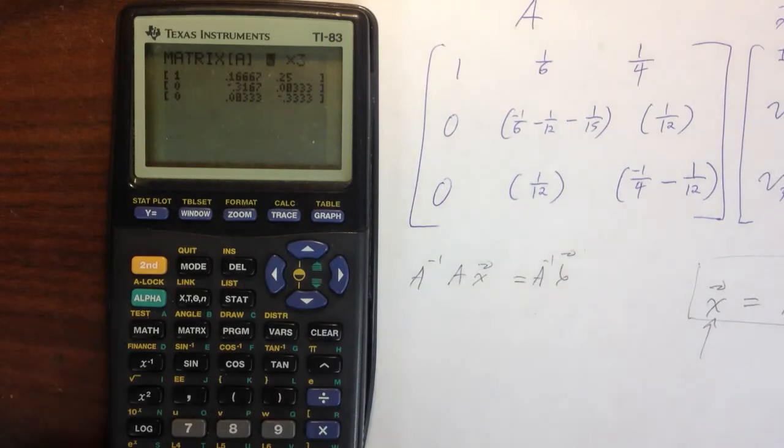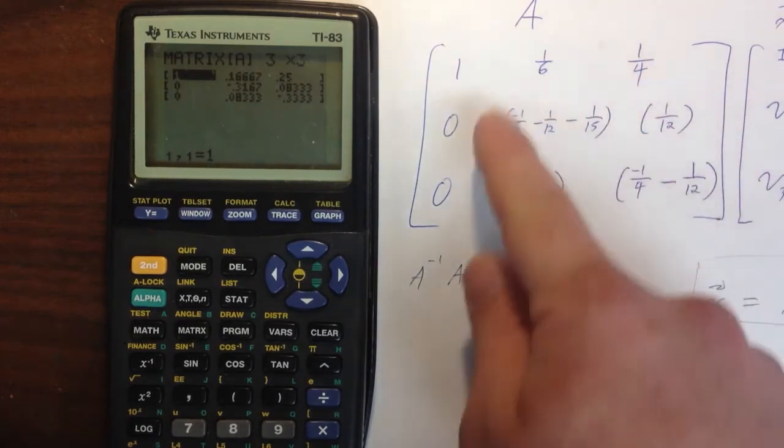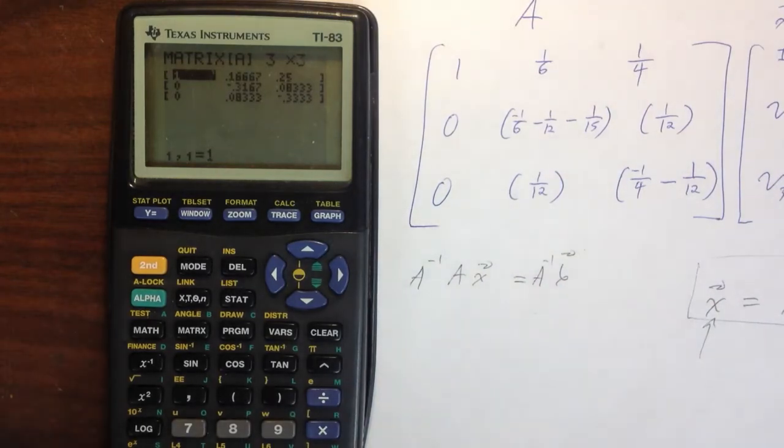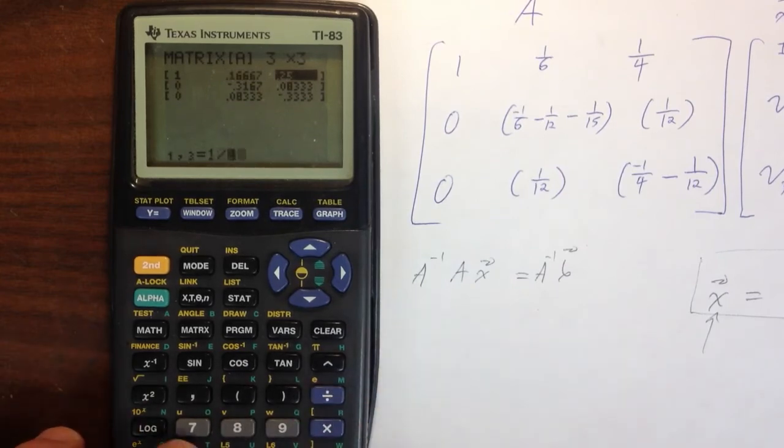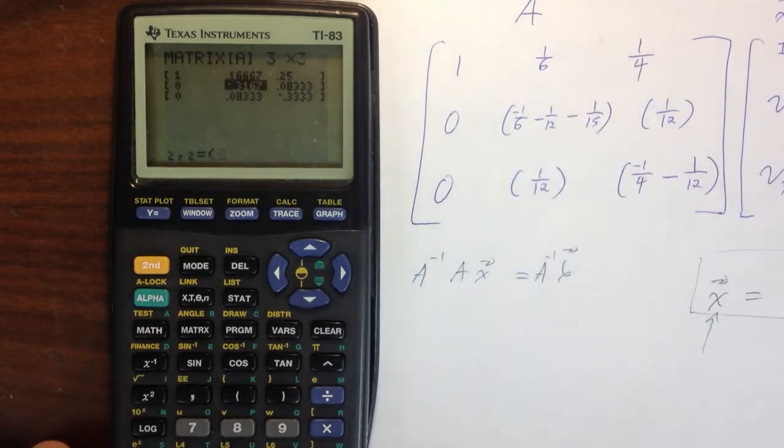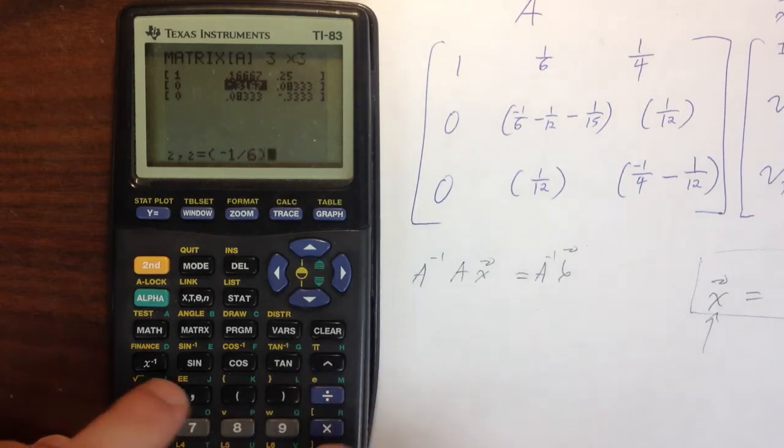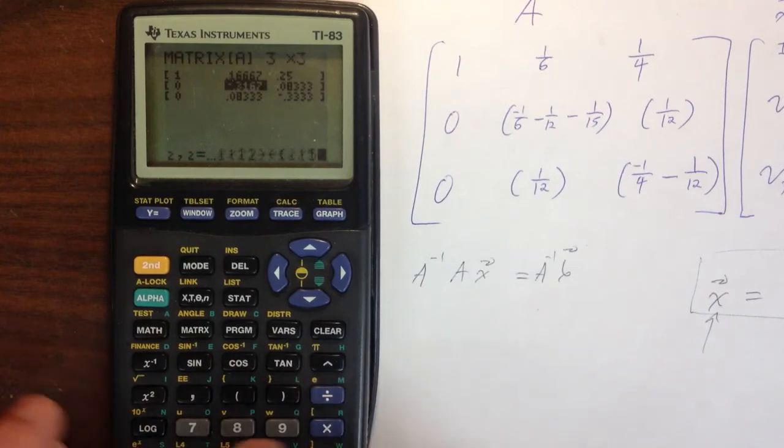Right now, I start off with a 3 by 3, so I'm actually going to keep that 3 by 3. I'm going to hit 3, enter, 3, enter. Now I'm going to go ahead and put in this information. Notice I'm not going to simplify this by hand. I'm just going to let the calculator simplify it for me. So I hit 1, enter, 1 over 6, enter, 1 over 4, enter, 0, enter. Then I'm just going to put in this whole string right here: minus 1 over 6, minus 1 over 12, minus 1 over 15, hit enter. Then I'm going to put in 1 over 12, 1 over 12, enter.